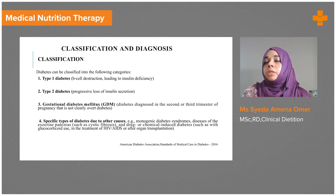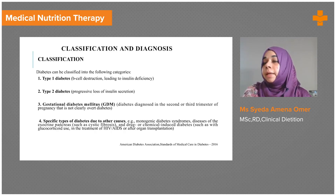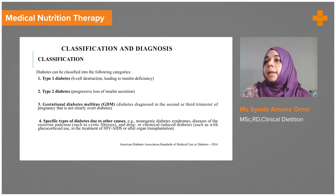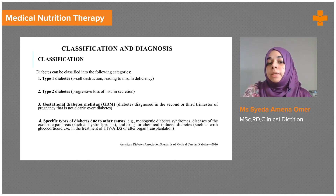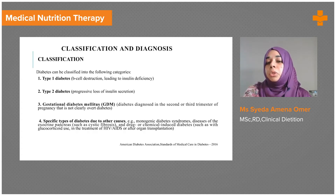Certain drugs compulsorily used in hospital settings, like steroids, can indirectly influence an increase in blood sugar levels and affect metabolism. Glucocorticoids such as steroids are used in organ transplants and in the treatment of conditions like HIV or AIDS, requiring patients to also take diabetic medications.